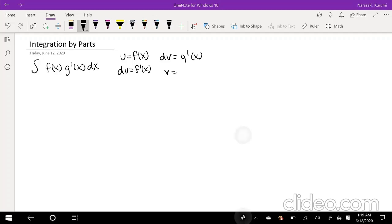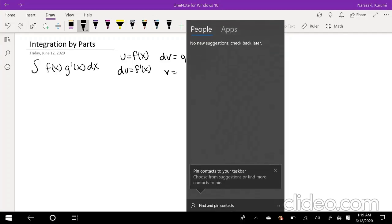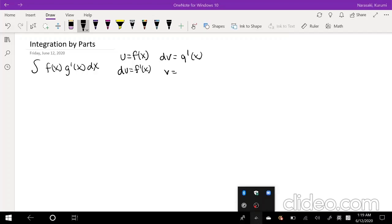and v would just be the anti-derivative of this one, which would just be g of x. Then what you want to do is you want to multiply across and take the integral of the v and the du.